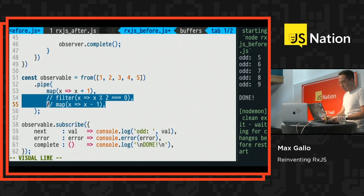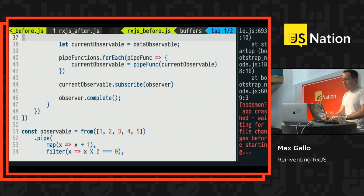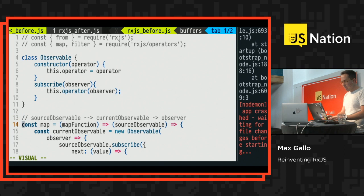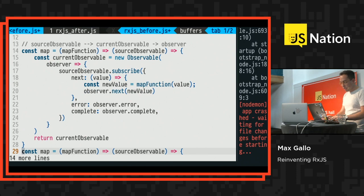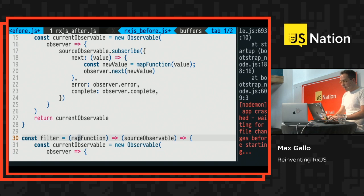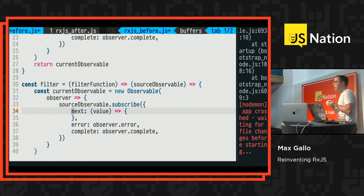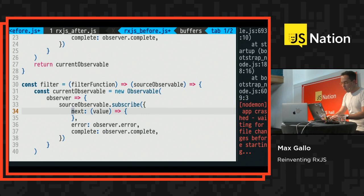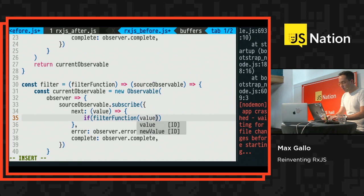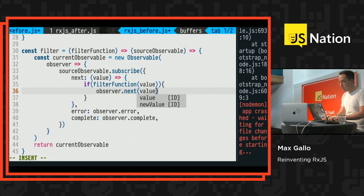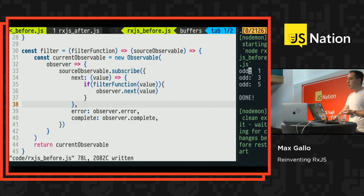To move forward we just need to bring back `filter`. At this stage, filter is no different from map — I'll copy map, rename it `filter`, and replace `mapFunction` with `filterFunction`. The only difference in the `next` handler is: instead of always calling `observer.next`, we check `if (filterFunction(value))` and only then call `observer.next(value)`. Otherwise we don't chain it. On the right-hand side we now see 1, 2, 3 and 5 — and I created my second operator within seconds.